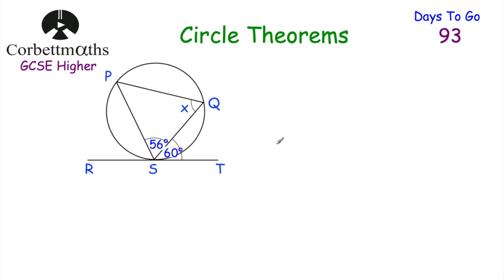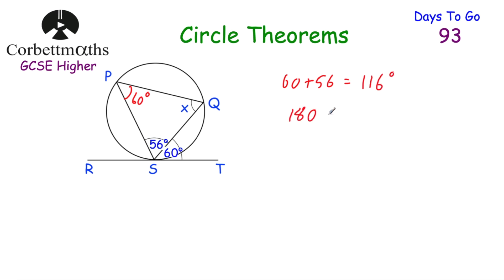Here are three practice questions — feel free to pause and try each one. In the first, we use the alternate segment theorem: the angle between the chord and tangent is 60 degrees, so the opposite angle inside the triangle is also 60 degrees. Then 60 plus 56 equals 116, and 180 subtract 116 equals 64 degrees. So x equals 64 degrees.